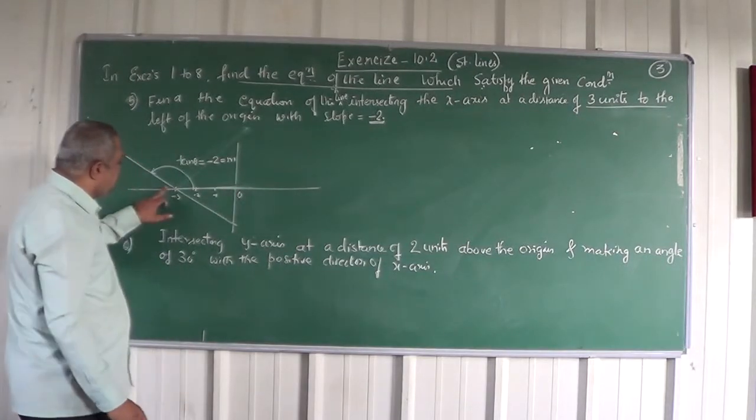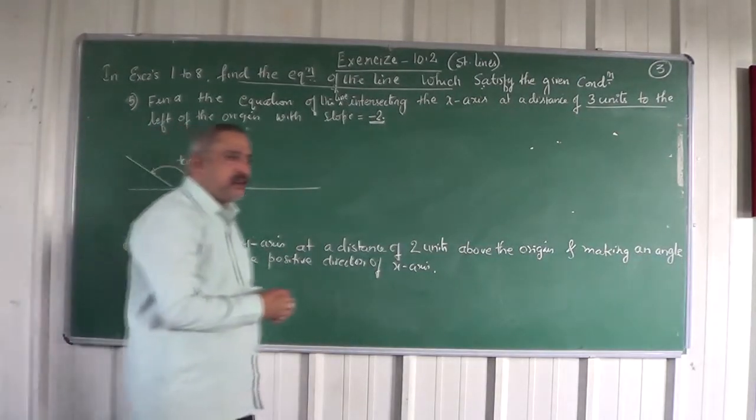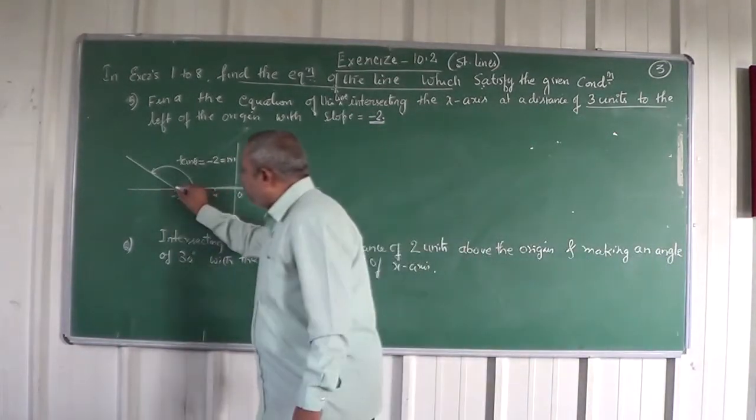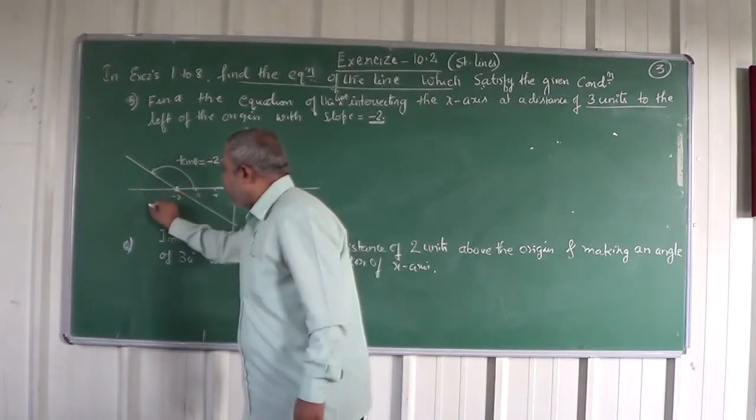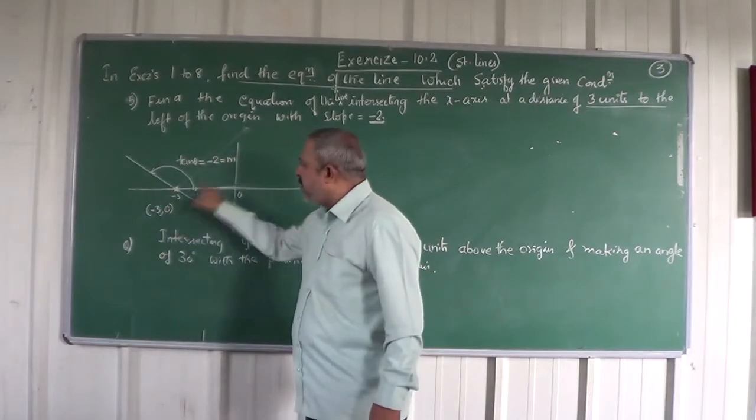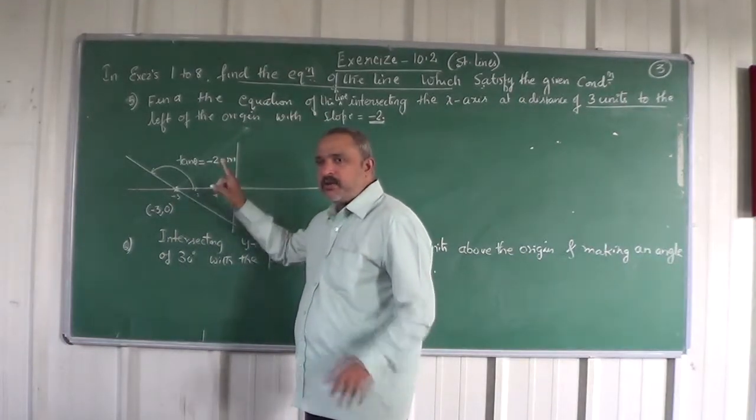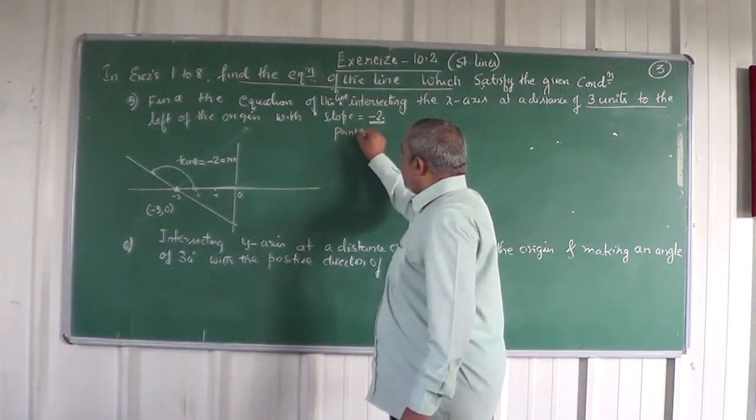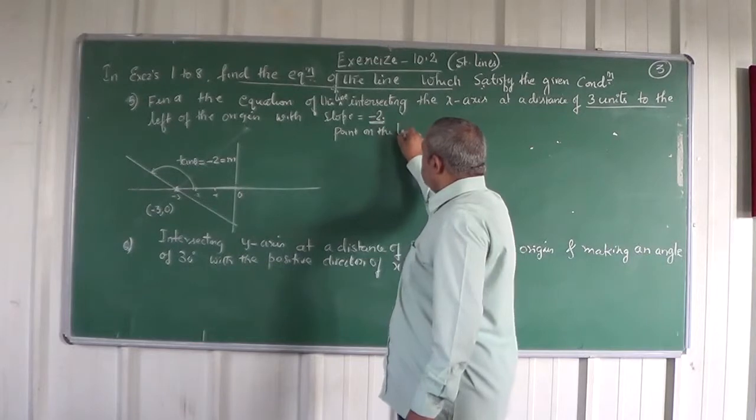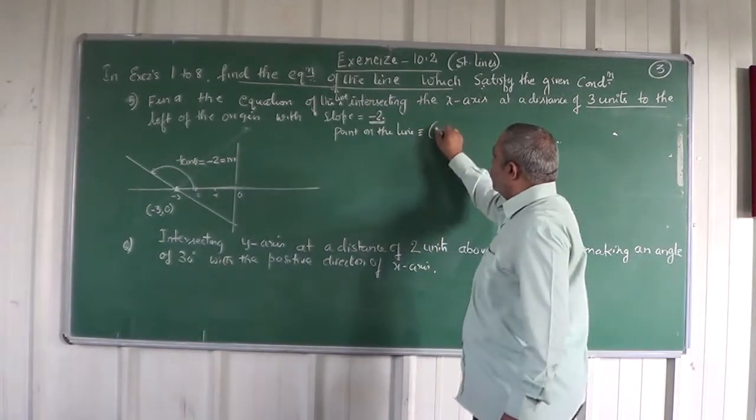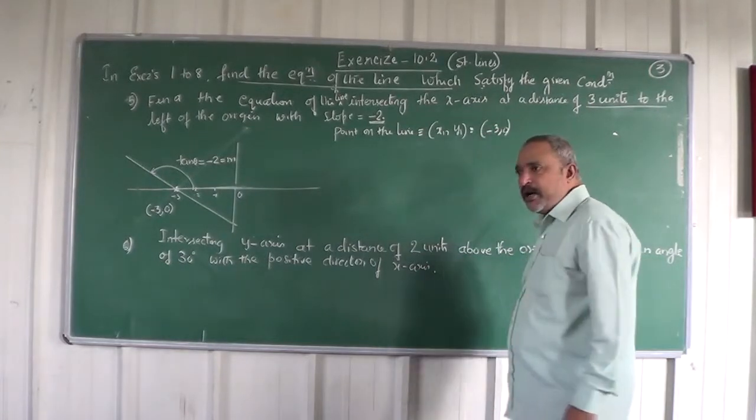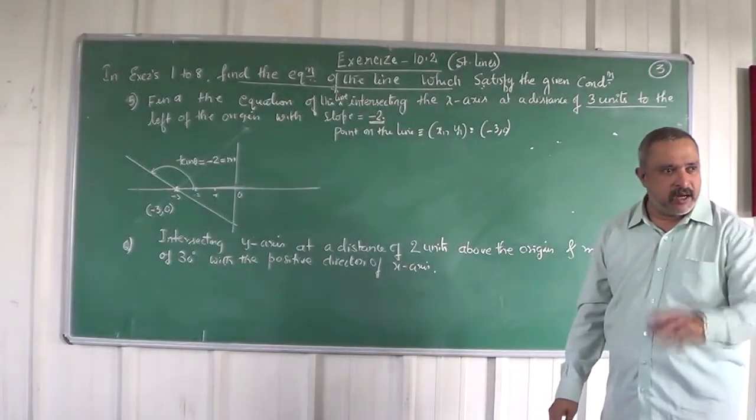And the line has cut the x-axis at a distance of 3 units on to the left side. So what is this point? Any point on the line, this is minus 3, 0. So you got a point on the line. Slope has been given, so you can use slope at one point form. Did you understand how do we get minus 3, 0?